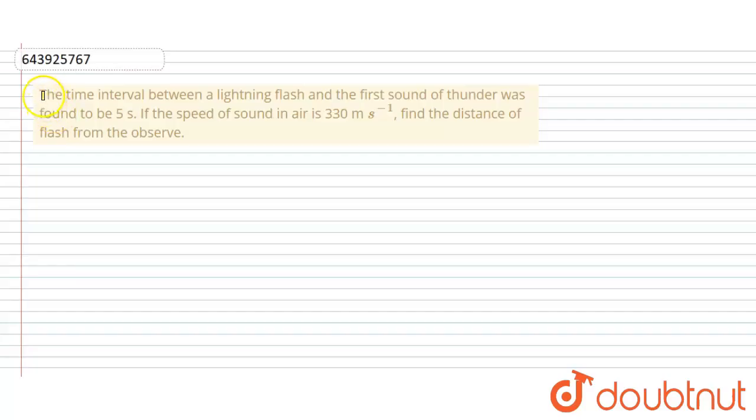Hello friends, this is our question. The time interval between a lightning flash and the first sound of thunder was found to be 5 seconds.